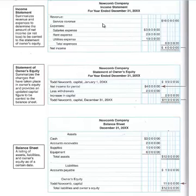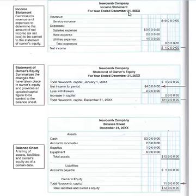Notice the heading on the income statement — headings are very important. The first line tells you the company's name, the second is the name of the statement, and the last line is the statement date. You must include all these elements. The date reads 'for the year ended December 31st, 2014' — you must specify the period, including the month, the last day of the month, and the year.